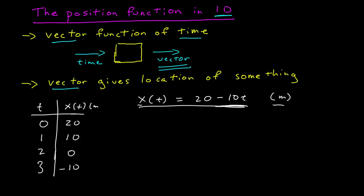And I was told here that these are in meters. So here I have a tabular representation. It gives me the location for specific points in time. This function tells me that at t equals 0, this function gives me the following vector. It has a magnitude of 20 meters and it's pointing along the positive x-axis.